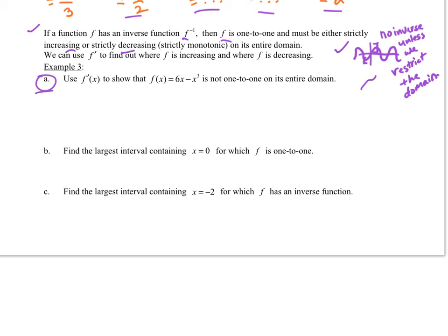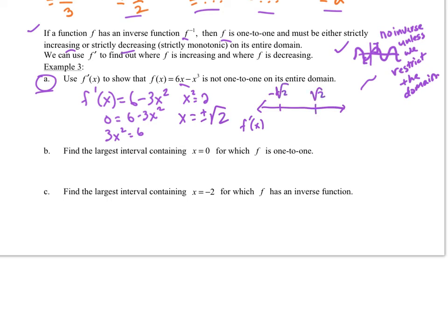So we want to look at this example A. Use f prime to show that f of x equals 6x minus x cubed is not one-to-one on its entire domain. So if I show that the derivative is sometimes positive, sometimes negative, I should be good to go. Why don't you try that too? So I get x squared equals 2, so x equals plus or minus square root of 2.